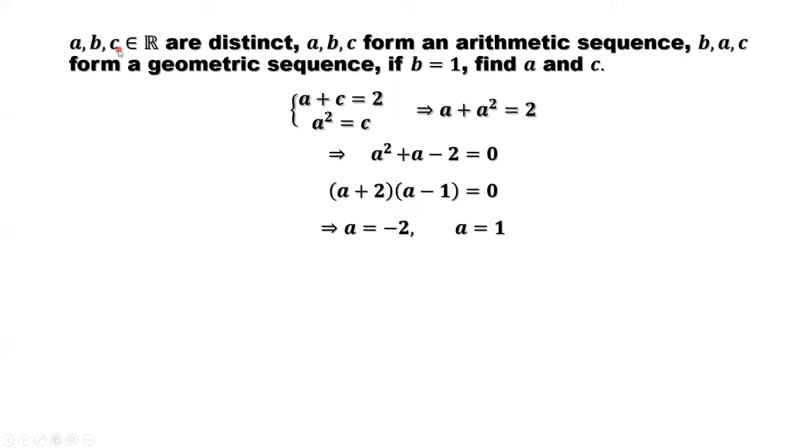B equals 1, so A cannot be 1. So A only can be negative 2. A does not equal B implies A equals negative 2. From this result, C equals A squared. Replace A by negative 2. Negative 2 squared is 4. We have the conclusion: A equals negative 2 and C equals 4.